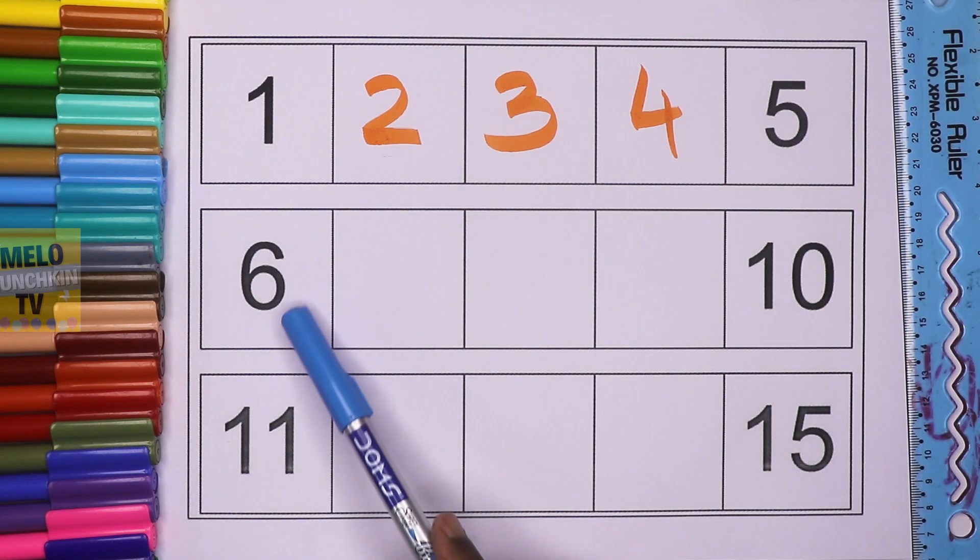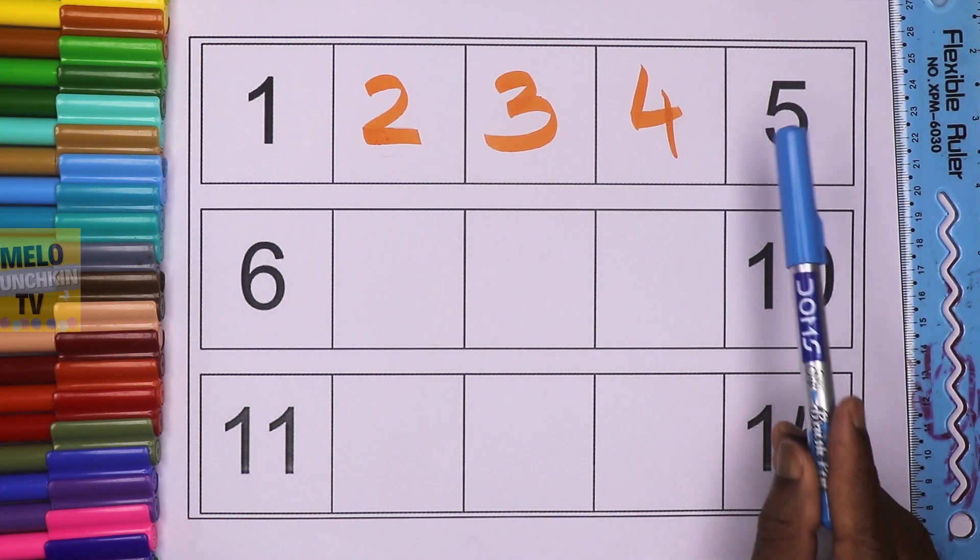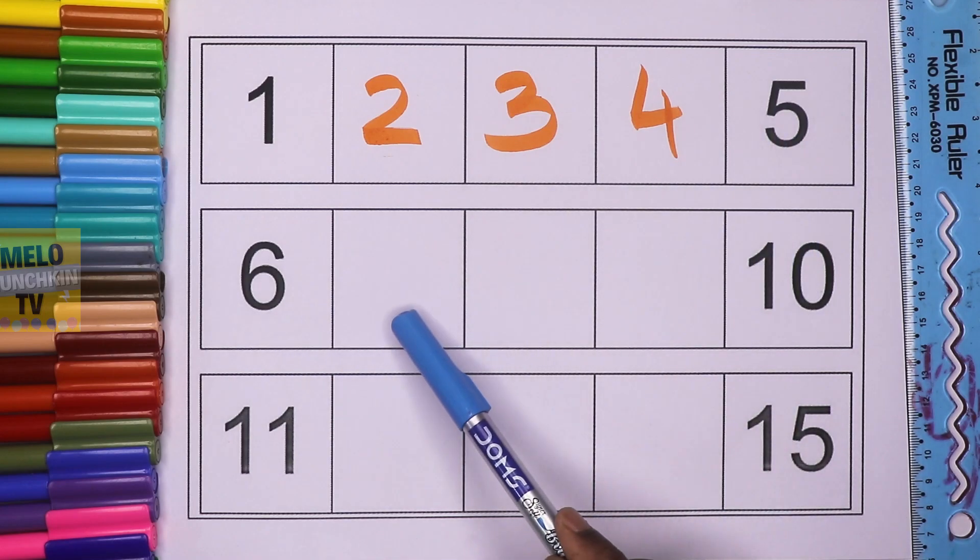What comes between 6 and 10? 5, 6, 7, 8, 9, then 10.